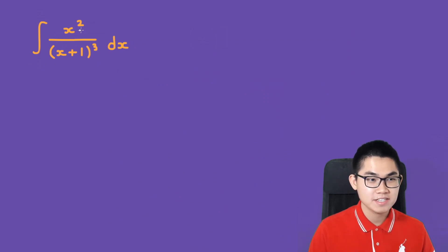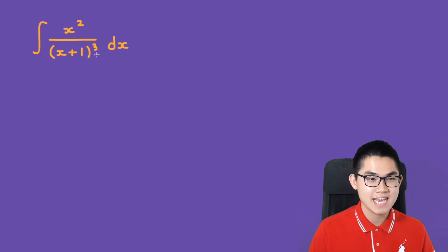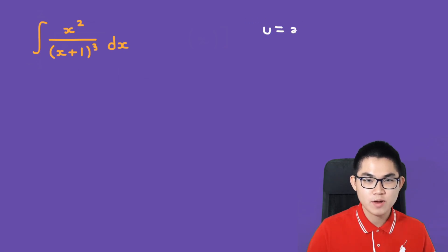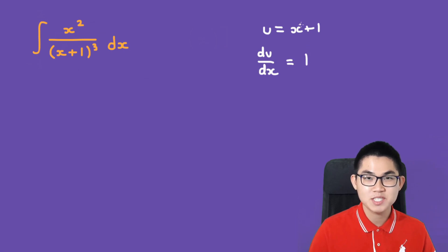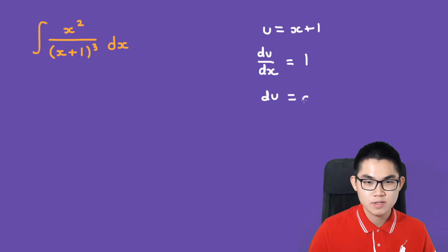We want to find the integral of x squared over (x plus 1) to the power of 3, dx. First, we let u equal to x plus 1. Then du/dx is 1 because we differentiate it, so du is equal to dx.